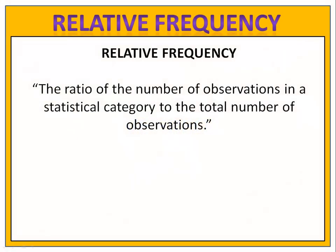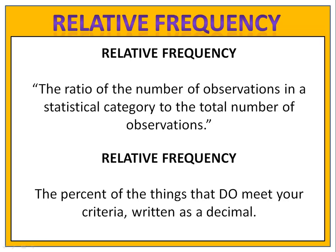Relative frequency is the ratio of number of observations in a statistical category to the total number of observations. In plain English, it's simply the percentage of the things that meet your criteria. We write the relative frequency as a decimal. Let's take a look at an illustration.